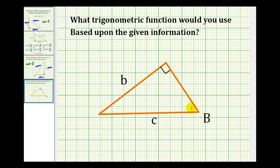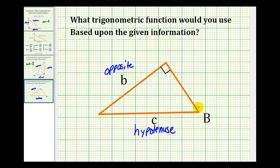Here's our last example. If we're referring to angle B, then side B would be the opposite side. The side opposite the right angle would be the hypotenuse, and this side here would be the adjacent side. So now we want a trig function that involves the opposite side and the hypotenuse — and that would be the sine function. So the sine of angle B is equal to the ratio of B to C.